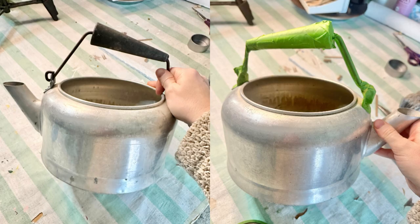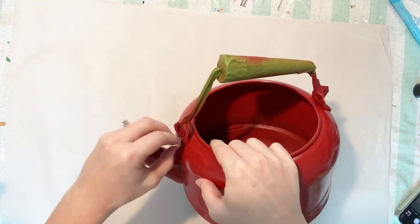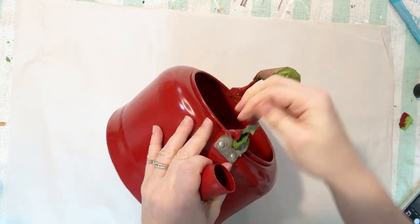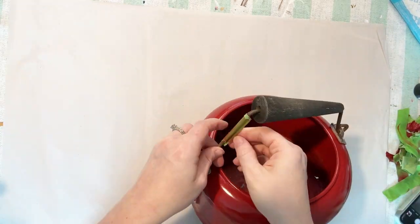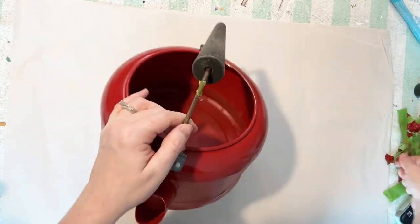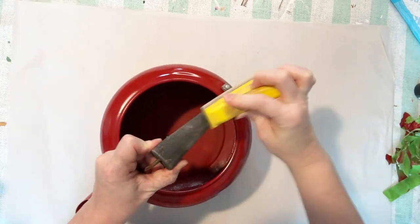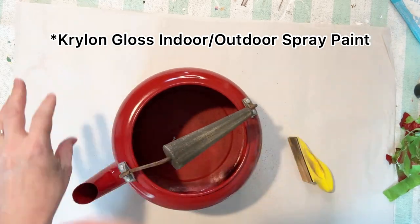Alright y'all, today we're going to make over this little kettle that I got from a thrift store. I started off by taping up with some painter's tape the handle and all the little parts. And then I spray painted it red with some red spray paint that would adhere to metal.